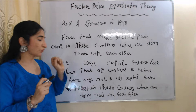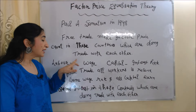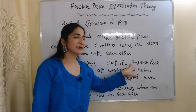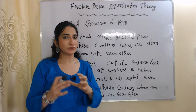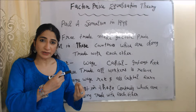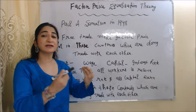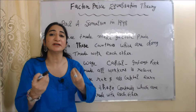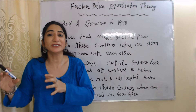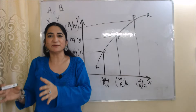As we know, there are mainly two factors of production: labor and capital. Price of labor is wage and price of capital is interest rate. According to this theory, in free trade all workers receive the same wage rate and all capital receives the same interest rate in those countries which are doing trade with each other.